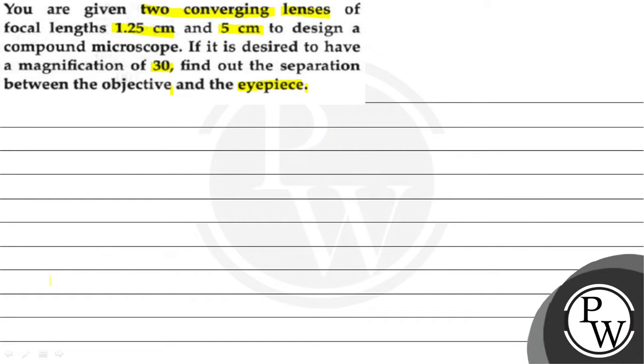In this question, we have given two converging lenses with focal length 1.25 cm and 5 cm and we have made a compound microscope. And this compound microscope magnification is 30. We need to find the separation between the objective and the eyepiece. The key concept which we use in this question is the magnification.